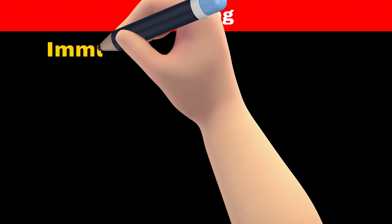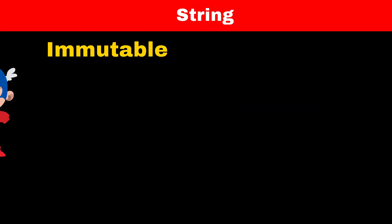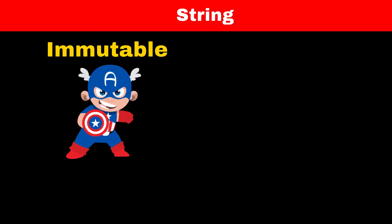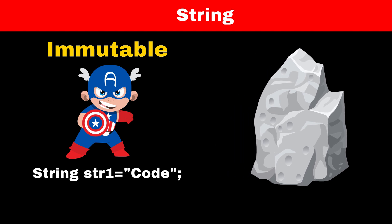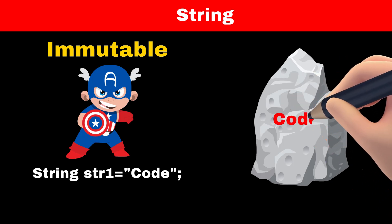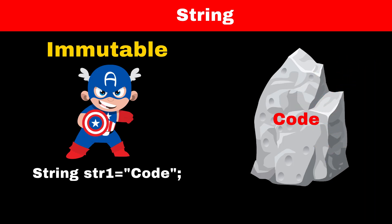First, let's meet the String class. It's immutable — like a superhero with an unbreakable shield. Once you create it, it remains the same forever, just like writing your name in stone. If we create string1 equal to 'code', Java will create an object in a string pool that cannot be modified. It's like writing something on a stone: easy to read, but impossible to modify.